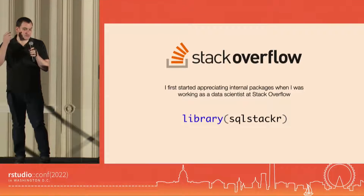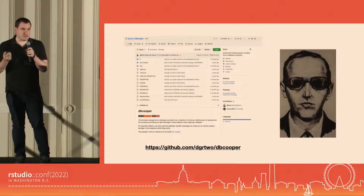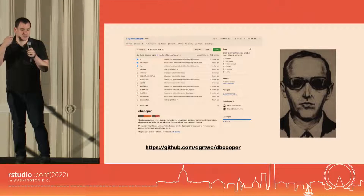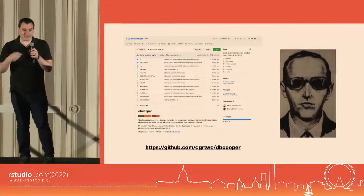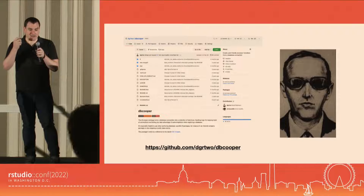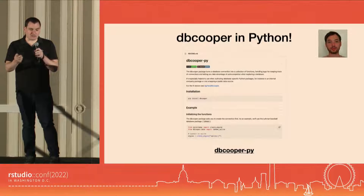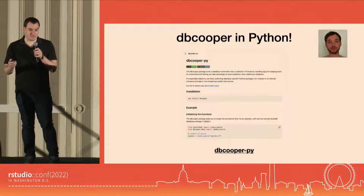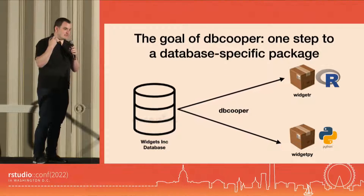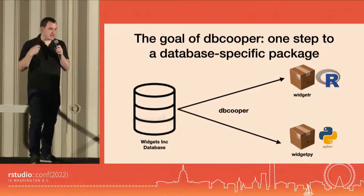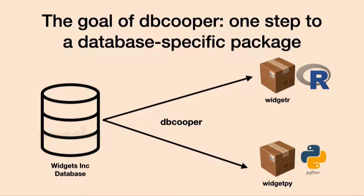So now we've open-sourced it as DB Cooper. DB Cooper started as an R package named after the famous bandit, the hijacker DB Cooper. And I'm excited to share that while it started as an R package, Michael Chow has actually ported it to Python. So now there's both a DB Cooper R and Python version. What they do is make it one step to create database-specific packages. So if you're at a company, Widgets Inc, you can use DB Cooper to create an internal package like widgetR or widgetPy to help analysts fluidly access the data in your databases.